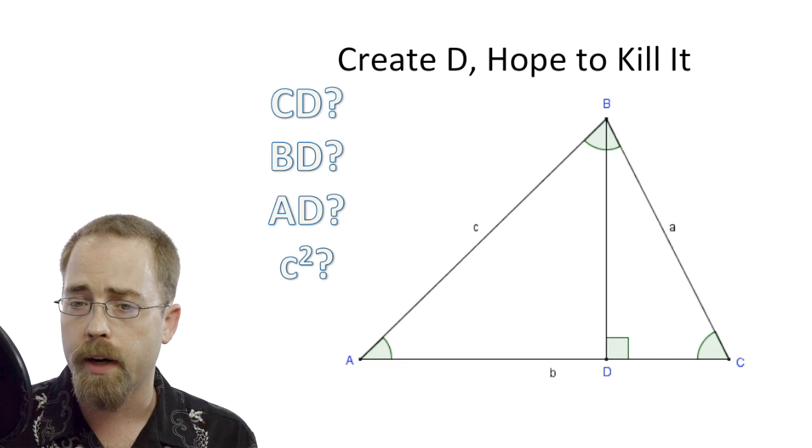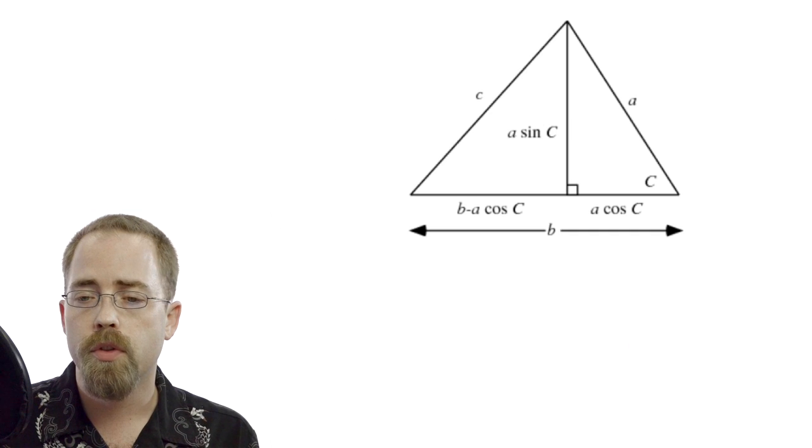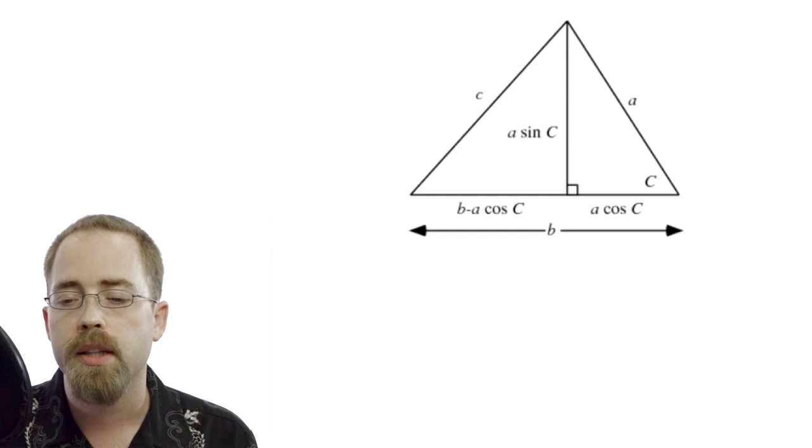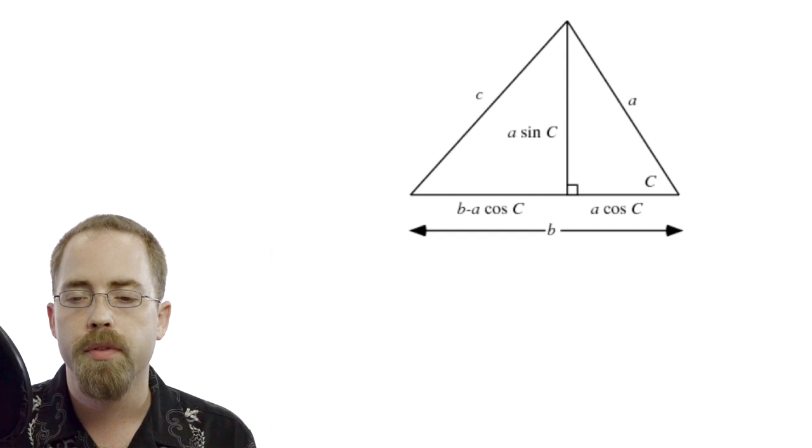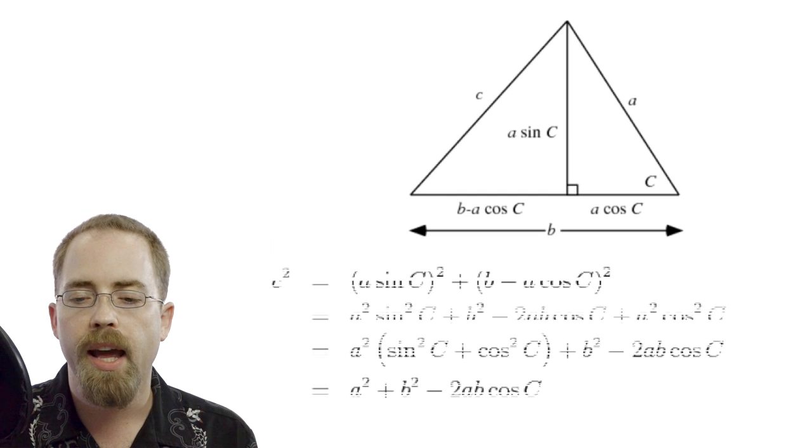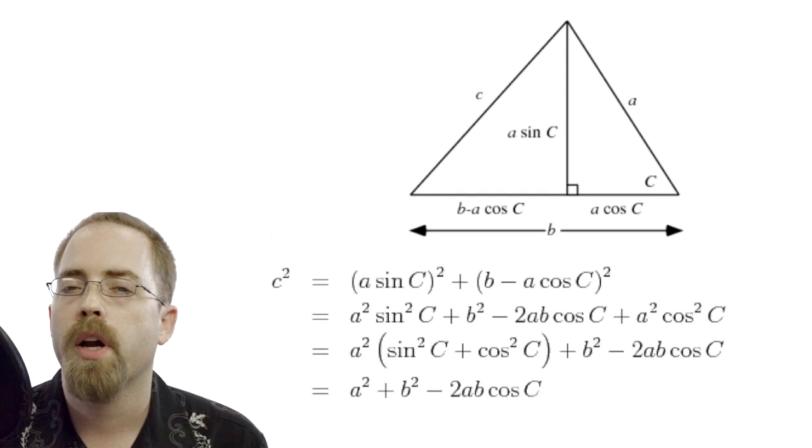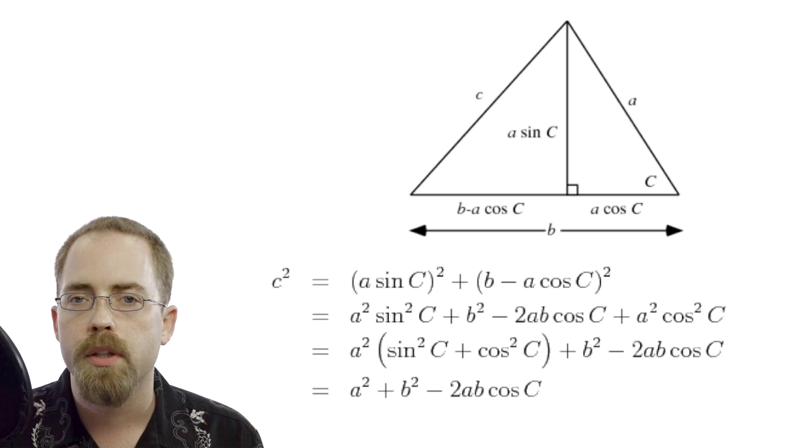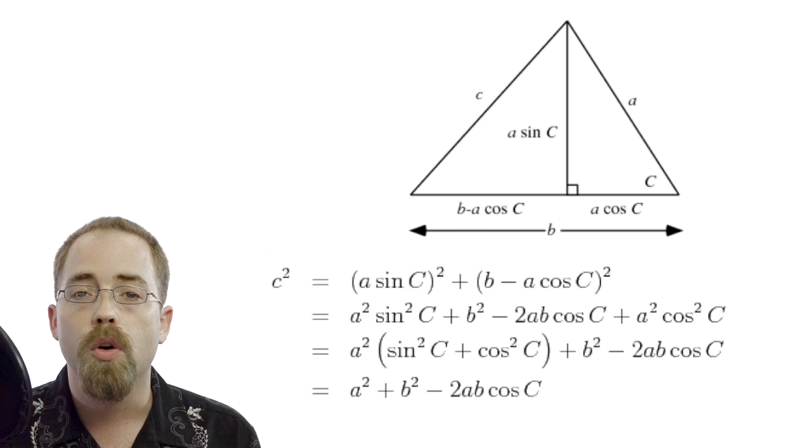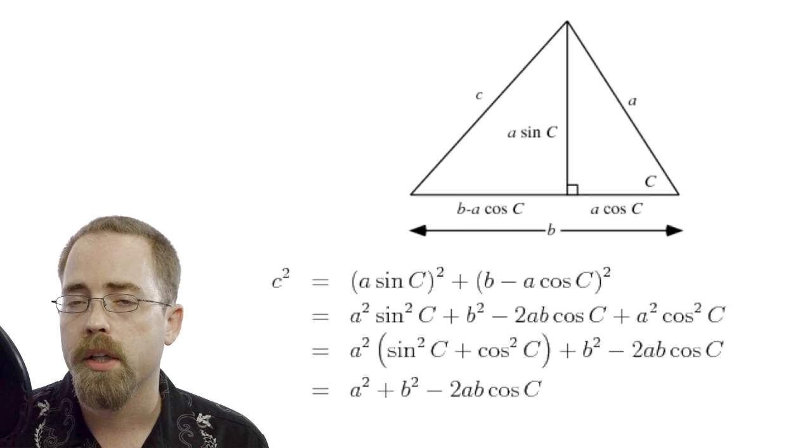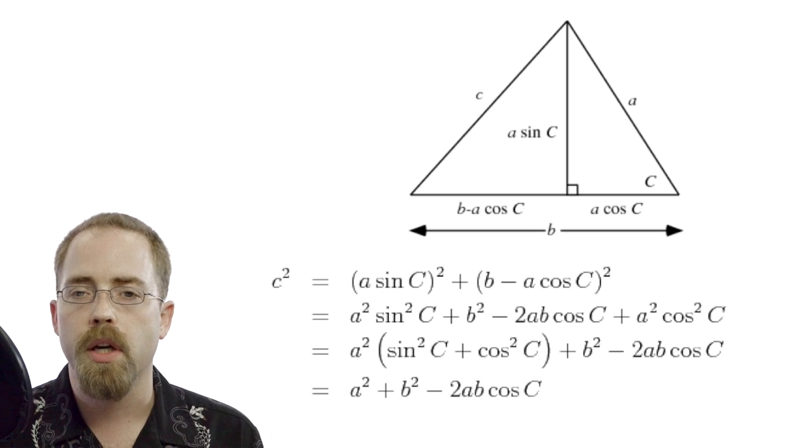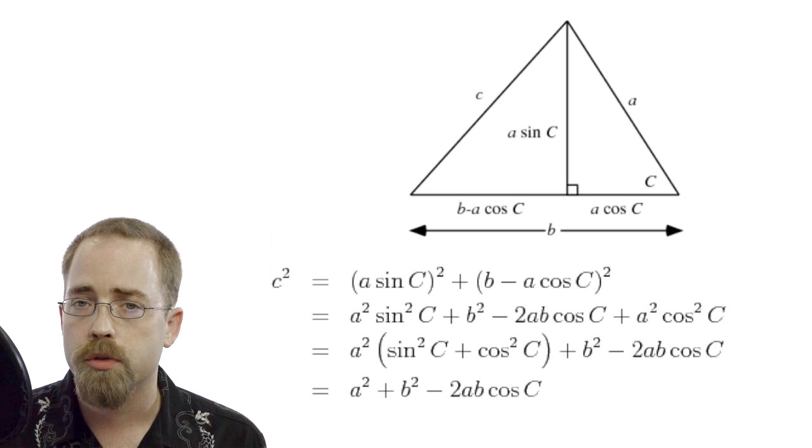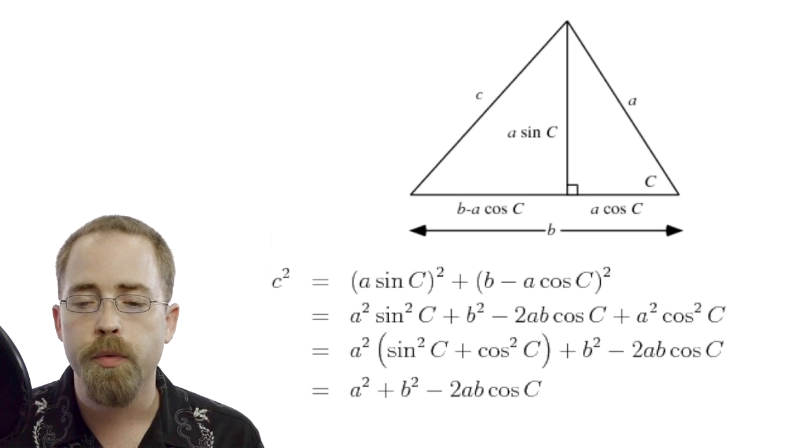So here's the things that I was just saying in the air. We said how to find those three lengths based off of all the definitions with sine and cosine. And now track with me one line at a time. c squared equals the other two legs of the right triangle, each squared being added. So a sine C quantity squared is just a squared sine squared C. That's not too bad.